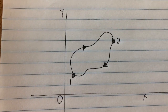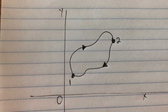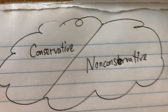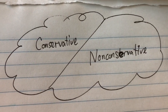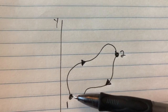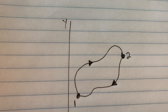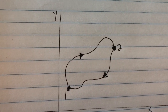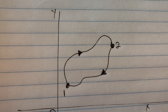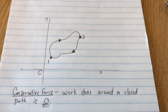Conservative forces are called path independent, and because of that they're very easy to work with. A lot of the forces important to us with potential energy are conservative forces, like gravity and the spring force. Other forces like friction are considered non-conservative because they depend on the path you take — friction depends on contact between two surfaces, so a longer path means more rubbing, more work done by friction, and energy is not conserved.